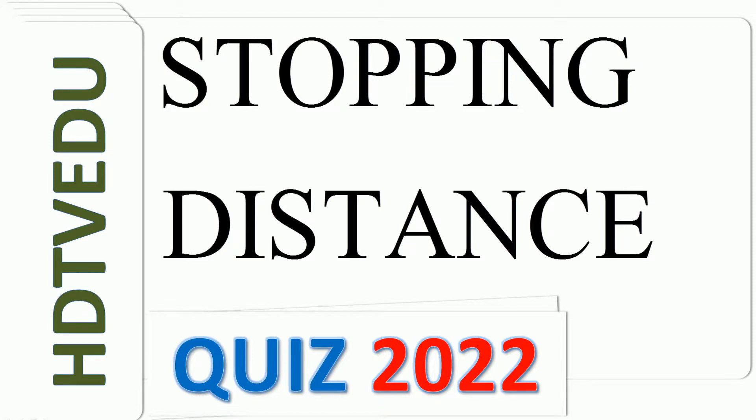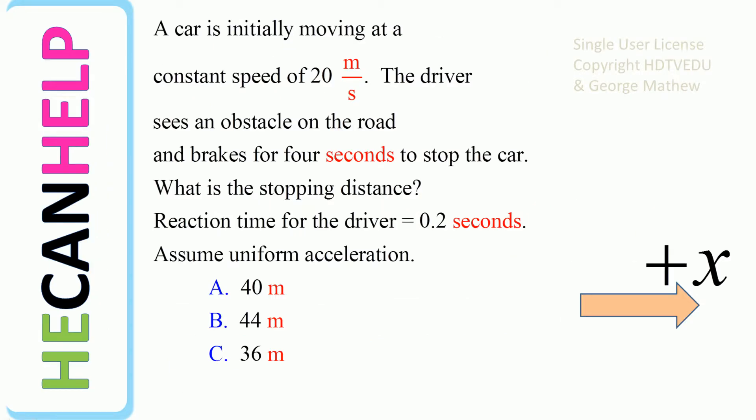Stopping Distance quiz 2022. A car is initially moving at a constant speed of 20 meters per second. The driver sees an obstacle on the road and brakes for 4 seconds to stop the car. What is the stopping distance? Reaction time for the driver is 0.2 seconds. Assume uniform acceleration.